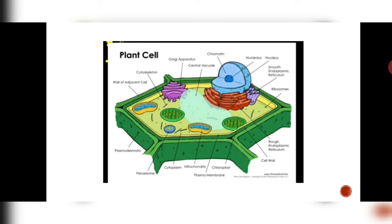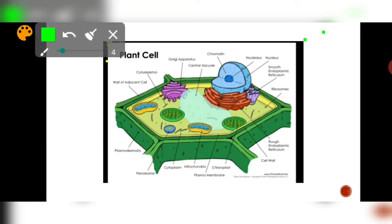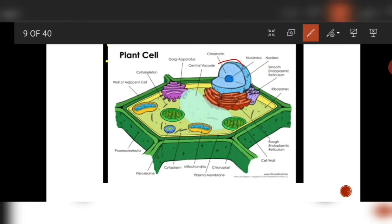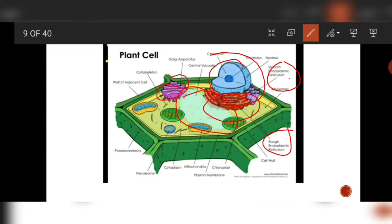Now let us discuss the plant cell. Unlike the animal cell, plant cells have a nucleus that is present in the periphery. Then there is endoplasmic reticulum — both smooth and rough endoplasmic reticulum, like the animal cell. But they have a vacuole which is large — a large central vacuole.